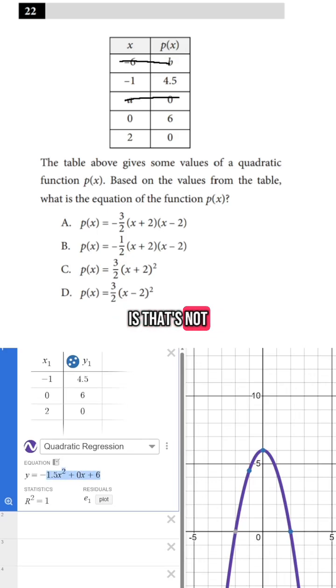But the problem is, that's not one of my answer choices. All I have to do is say, what do my answer choices look like? They look like a times (x plus b) times (x plus c). And in these two answer choices of C and D, it just looks like b and c are the same. That's why we get squared.